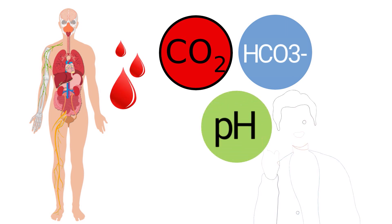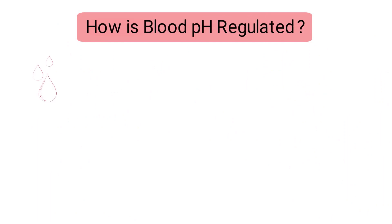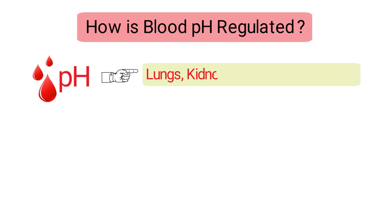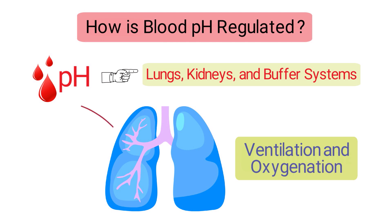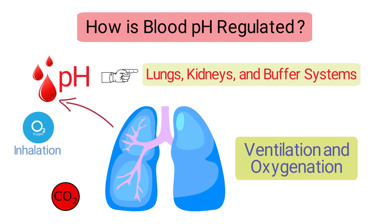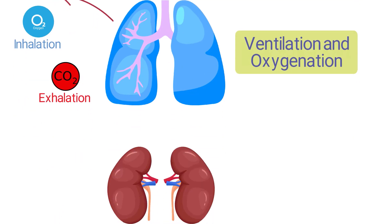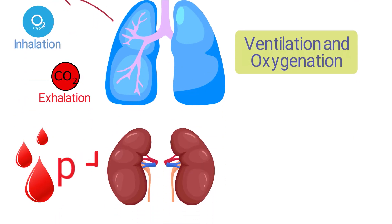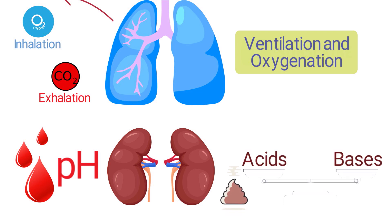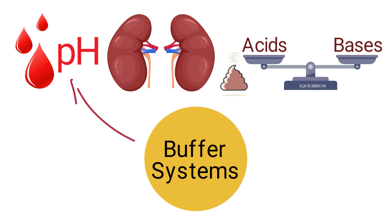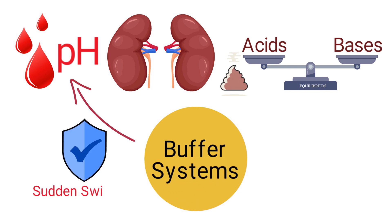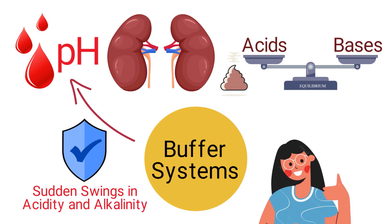The human body strives to regulate the amount of carbon dioxide and bicarbonate in the blood to keep the pH within the normal range. Blood pH is regulated by the lungs, kidneys, and buffer systems. The lungs help with ventilation and oxygenation — they provide the blood with oxygen during inhalation while removing carbon dioxide during exhalation. The kidneys help regulate blood pH by excreting acids or bases to maintain proper balance. Buffer systems guard against sudden swings in acidity and alkalinity.